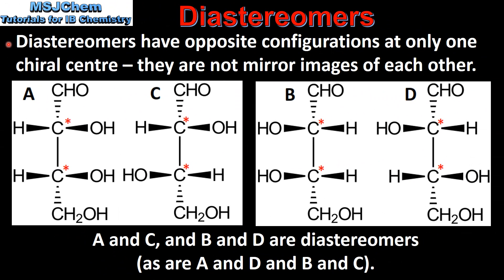Diastereomers, or diastereoisomers, have opposite configurations at only one chiral center, therefore they are not mirror images of each other. If we compare diastereomers A and C, we can see that they have the same configuration at this chiral center, but opposite configurations at this chiral center, therefore they are not mirror images of each other.